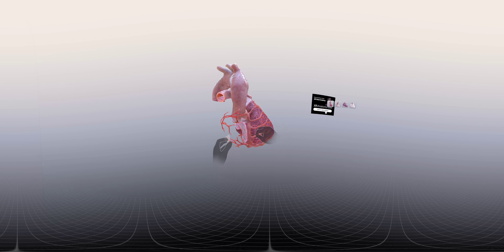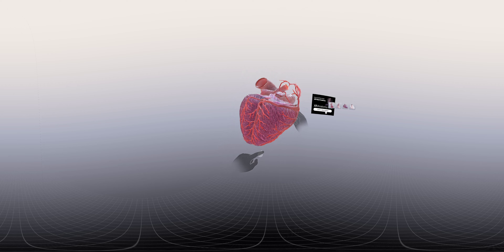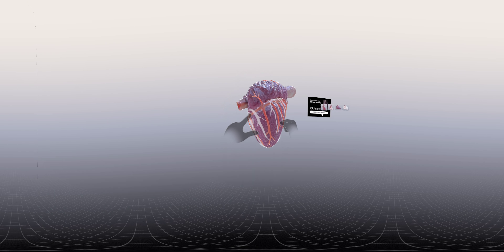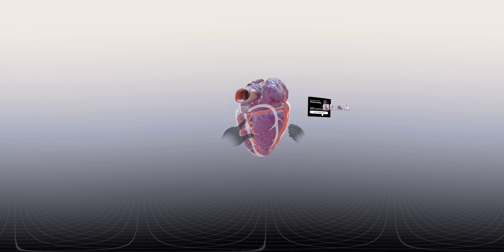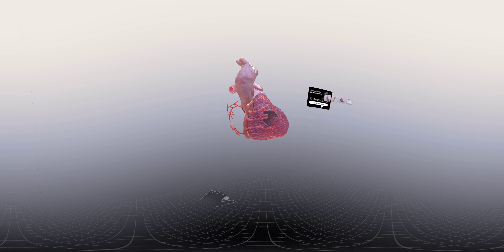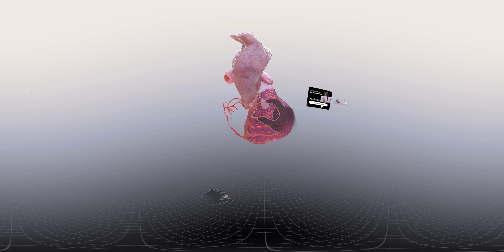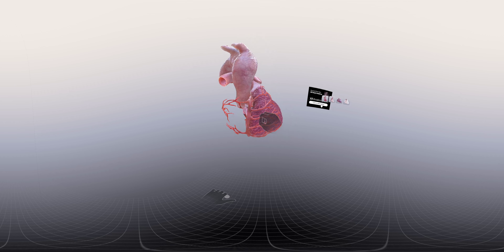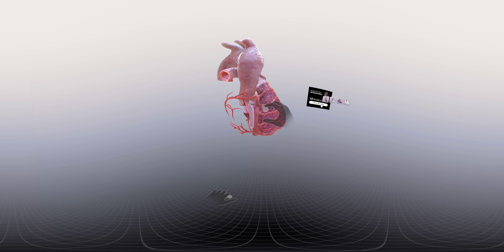The right coronary artery is the artery that courses towards the diaphragmatic surface of the heart, along the right portion of the coronary sulcus. If we follow its course from its origin, we can see that it originates from the right sinus of the aorta, or the right sinus of Valsalva.